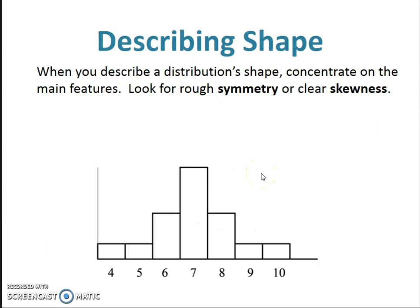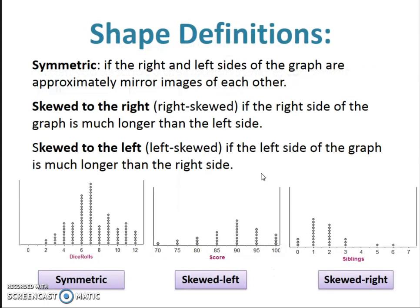There are going to be three general shapes that we talk about: either a graph is symmetric, skewed to the right, or skewed to the left. If it's symmetric, the right and left sides of the graph are approximately mirror images — approximately, more or less. So don't be too nitpicky. This graph down here is not perfect, but I'd call it symmetric — it's about even on both sides from the center.